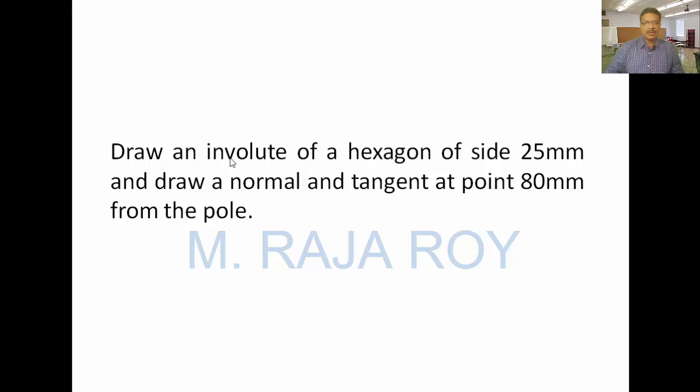In this tutorial, I am going to explain how to draw an involute of a hexagon. Draw an involute of a hexagon of side 25 mm and draw the tangent and normal at a distance of 80 mm from the pole. This is the given problem.